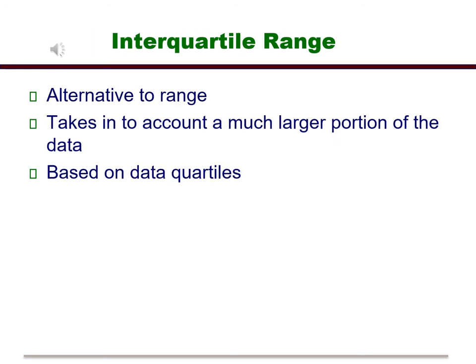So in this case, we will use something called the interquartile range or IQR for short. The IQR is an alternative to the range. It takes into account a much larger portion of the data than the range does. It is a number based on the data quartiles. Let's discuss what these are.